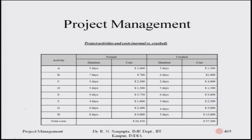In the table, activities are listed in the first column. Normal durations are: A = five days, B = seven days, C = three days, and so on. Normal costs in dollars are: A = one thousand, B = seven thousand, C = two thousand five hundred, D = one thousand five hundred, E = three thousand seven hundred fifty, F = one thousand six hundred, G = two thousand four hundred, and H = nine thousand.